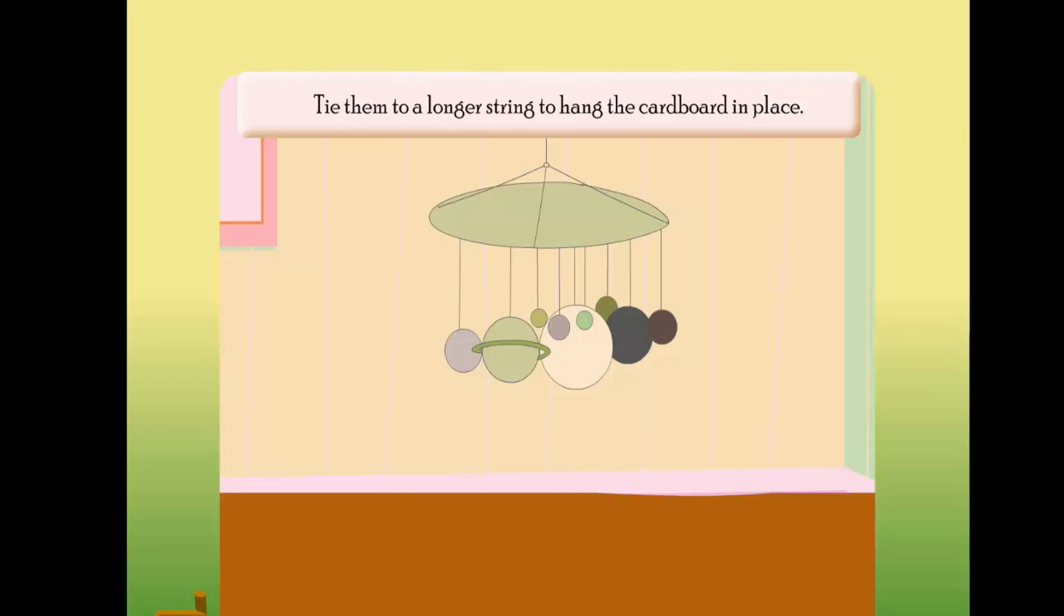As shown, tie them to a longer string to hang the cardboard in place. You now have a model of the solar system.